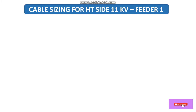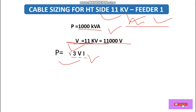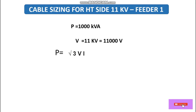Cable sizing for the HT side — that is the 11 kV Feeder 1. The capacity of the transformer is 100 kVA, which is the apparent power. The HT side voltage is 11 kV from the point of supply, which is 11,000 volts. The formula for apparent power is: S = √3 × V × I, where I is the full load current. Using this formula, we calculate the full load current.